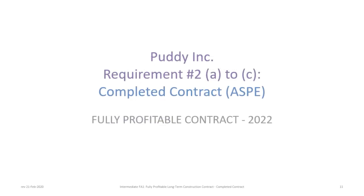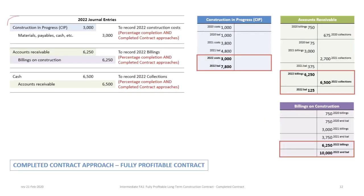Finally, we'll finish the problem for 2022. The same set of journal entries applies: another $3 million in costs to construction in progress, billings of $6.25 million debiting accounts receivable and crediting billings on construction, and a collection entry of $6.5 million. This leaves a balance of $125,000 in accounts receivable, $7.8 million in construction in progress, and $10 million in billings on construction.